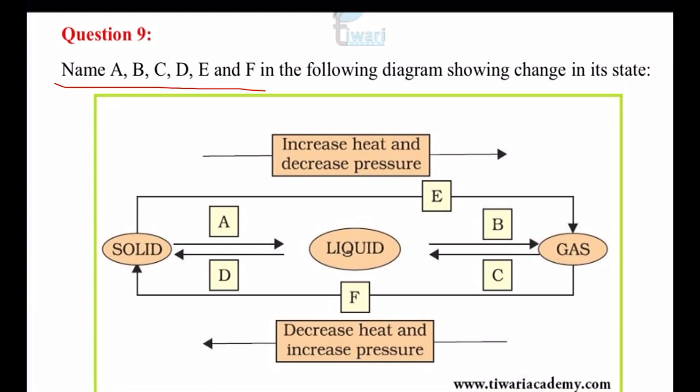This is the last question of your chapter number 1. Name A, B, C, D, E and F in the following diagram showing changes in its state.